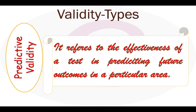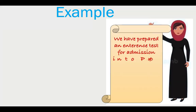Predictive validation provides the most relevant information for tests used in the selection and classification of persons. Some uses include hiring job applicants, selecting students for admission to colleges or professional schools, and assigning military persons to occupational training programs.